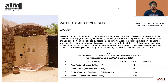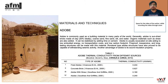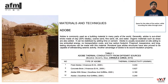Materials and techniques. Let's start with Adobe. Adobe is commonly used as a building material in many parts of the world. Generally, adobe is sun-dried bricks made up of 20% clay, coarse sand, fine sand, silt, and water. Organic materials such as straw are also added. It can be stabilized by adding cement or lime. Adobe is usually excavated on-site, adding to low embodied energy, no transportation cost, and low carbon footprint. Fireproof, inexpensive, and long-lasting structures can be made with this material. Another advantage of adobe is its sound insulation properties. Table 1 describes the thermal conductivity for different sources.